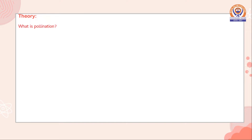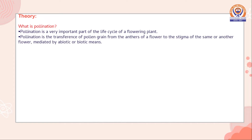The theory of this experiment is: first, what is pollination? Pollination is a very important part of the life cycle of a flowering plant. Pollination is the transference of pollen grains from the anthers of a flower to the stigma of the same or another flower, mediated by abiotic or biotic means.